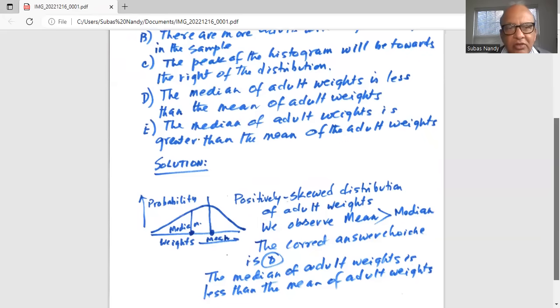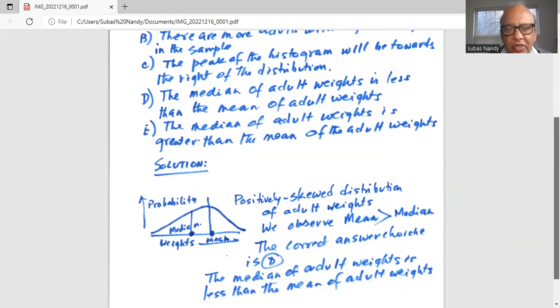Hence, the correct answer choice is D, which states that the median of the adult weight is less than the mean of the adult weights.